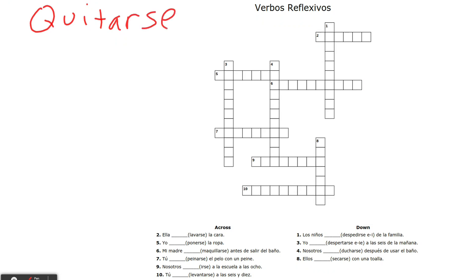So quitarse is used to say like you're taking something off. When you're using a reflexive verb, step one is you're going to take the se that's at the end of the verb off of it, and then you're going to put that into the front and then change it.